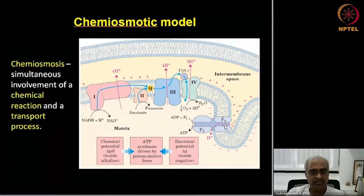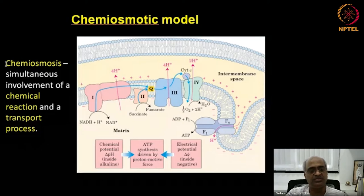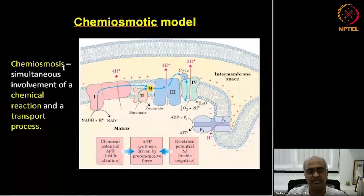This involves a chemical potential like pH difference and also a transport process — protons coming down a gradient. That is why Peter Mitchell chose the word 'chemiosmosis' to signify that the process involves both a chemical reaction and a transport process, transported through this pump. Both these energy components go into ATP synthesis.